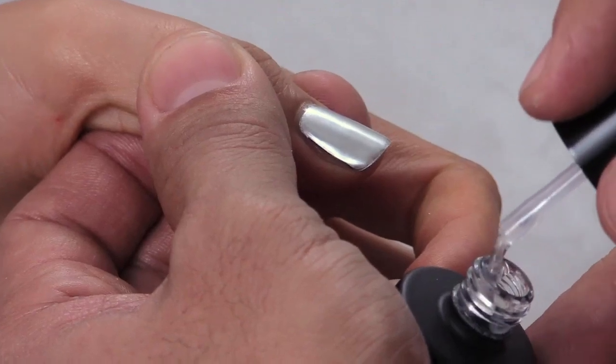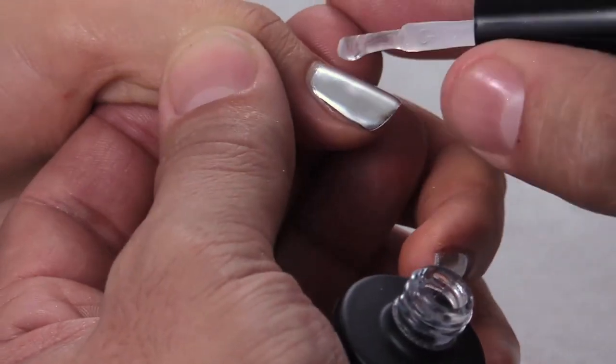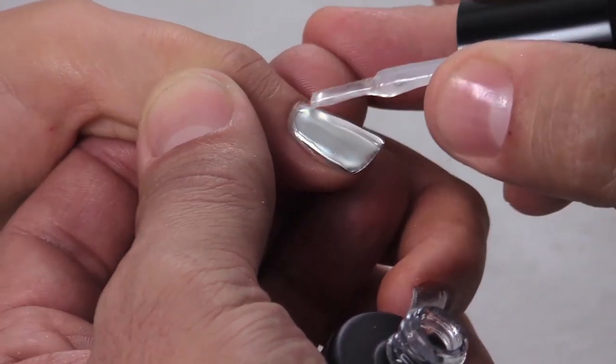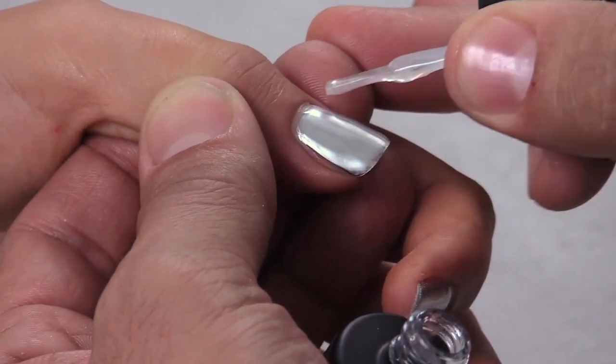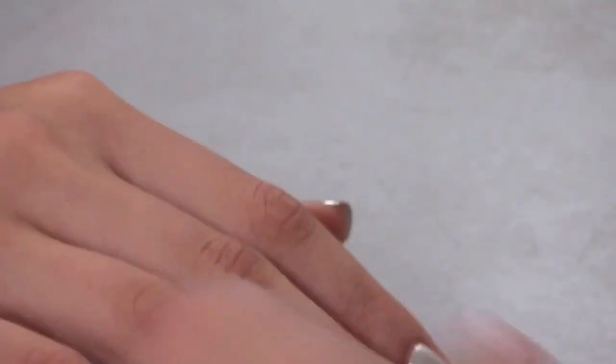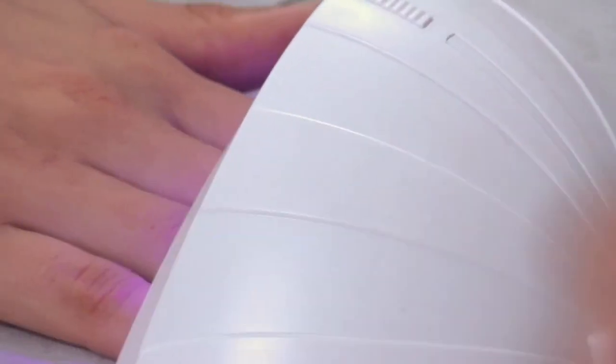As soon as you've got the sealer locked in, you want to go ahead and finish it off with top gel application. We're going to apply a nice thin coat from cuticle to free edge. After you've applied it to all five fingers, cure it in an LED for one minute or UV for two.